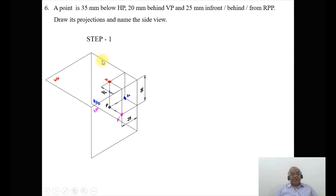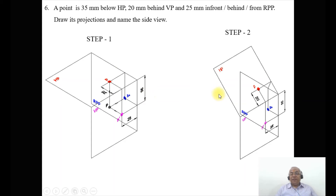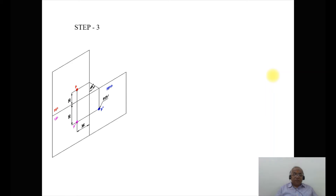When we cut it here and open it, the horizontal plane is rotated in the clockwise direction and the right profile plane is also rotated in the clockwise direction. In the intermediate position, the horizontal plane rotates to the top and the right profile plane rotates to the right side. Finally, behind RPP is seen in both the vertical plane and the horizontal plane. When looking from the top view, the behind VP of 20 mm is seen in the horizontal plane.